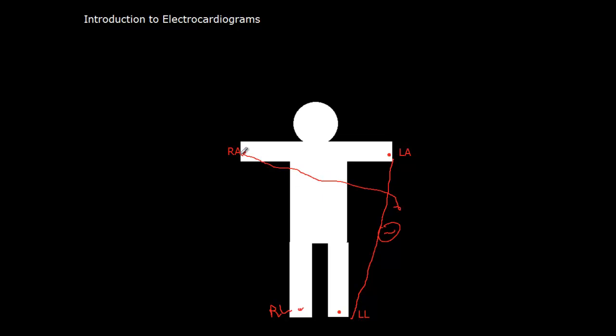And then that is compared to the right arm. Sorry about that. And that's positive. And that is going to be AVR as it goes to the right arm.